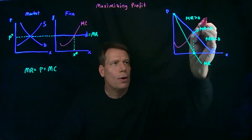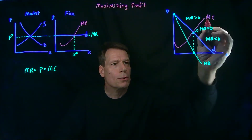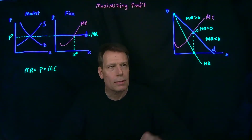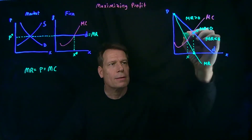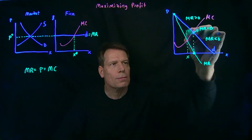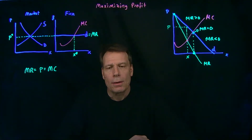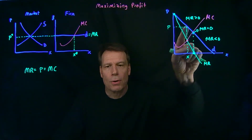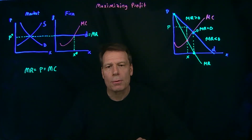If we add a marginal cost curve to this picture, the firm is going to produce until marginal cost is equal to marginal revenue — until this point here. So they're going to produce this quantity, and then they're going to charge the price that the demand curve tells them they're able to charge for that quantity. So rather than price being set by the market, the firm determines what price it wants to charge by figuring out what quantity sets marginal cost equal to marginal revenue. And you can see the intuition in the picture.